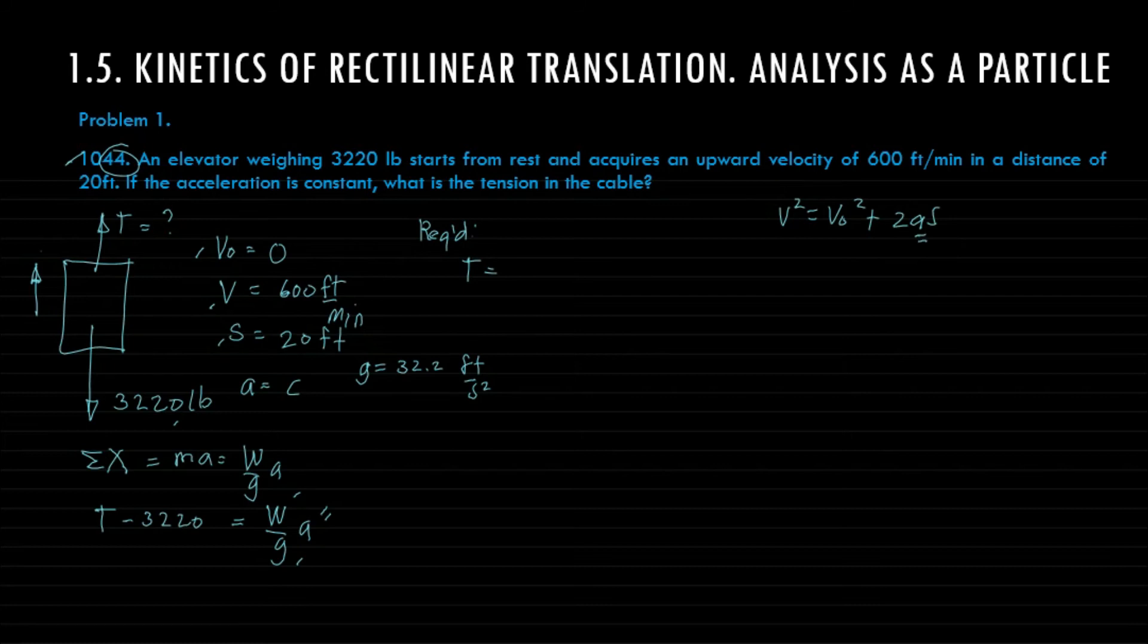Therefore we can solve a here where a equals v² minus v₀² over 2s. So we have here the final velocity 600 feet per minute and v₀ zero. For us to solve acceleration we need to convert this into feet per second.